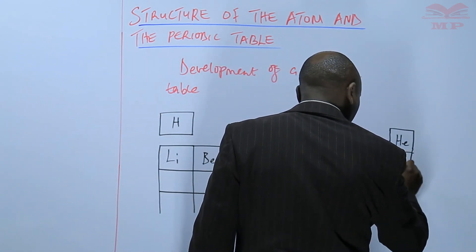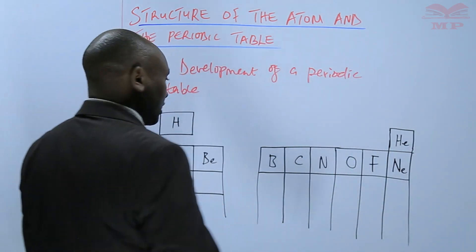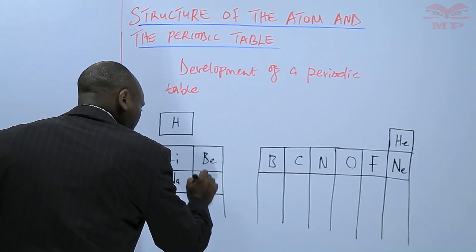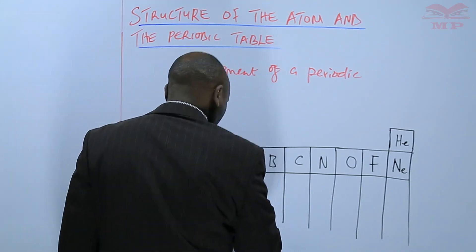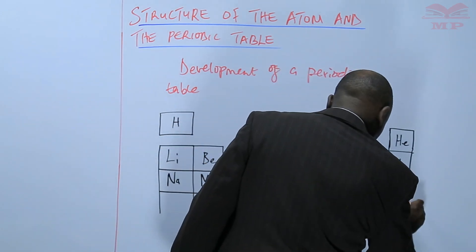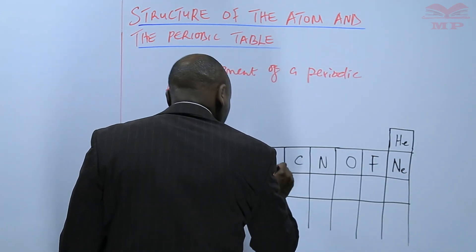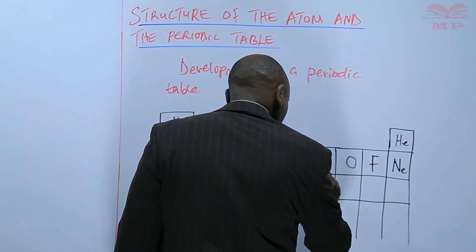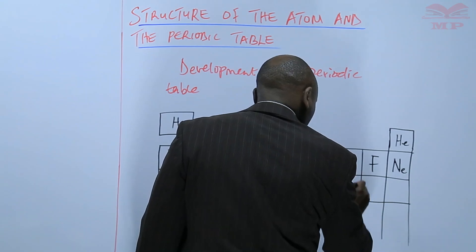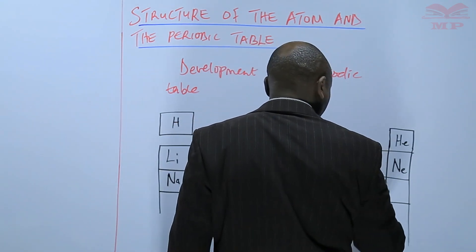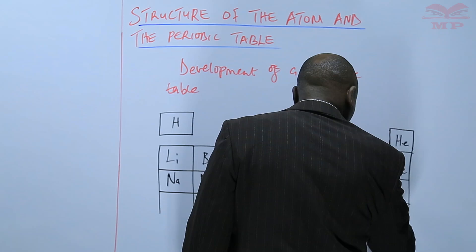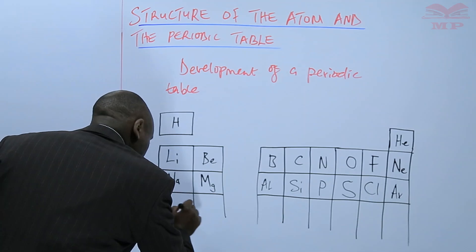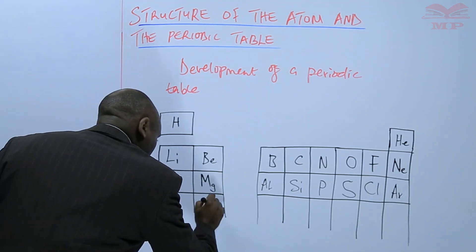Magnesium, aluminum, silicon, phosphorus, sulfur, chlorine, argon, potassium, and calcium. So 20 elements.